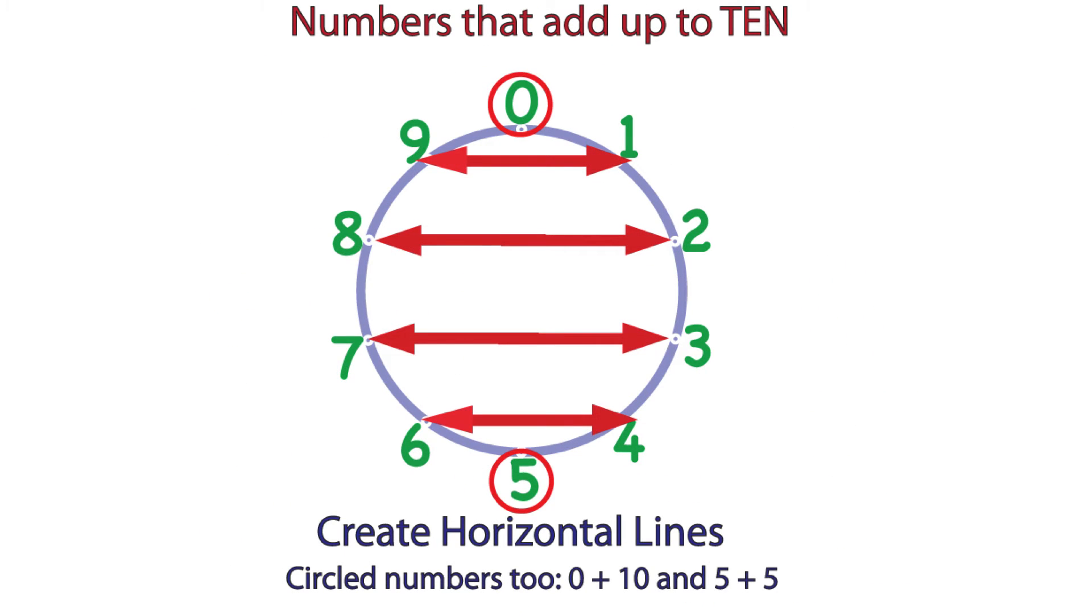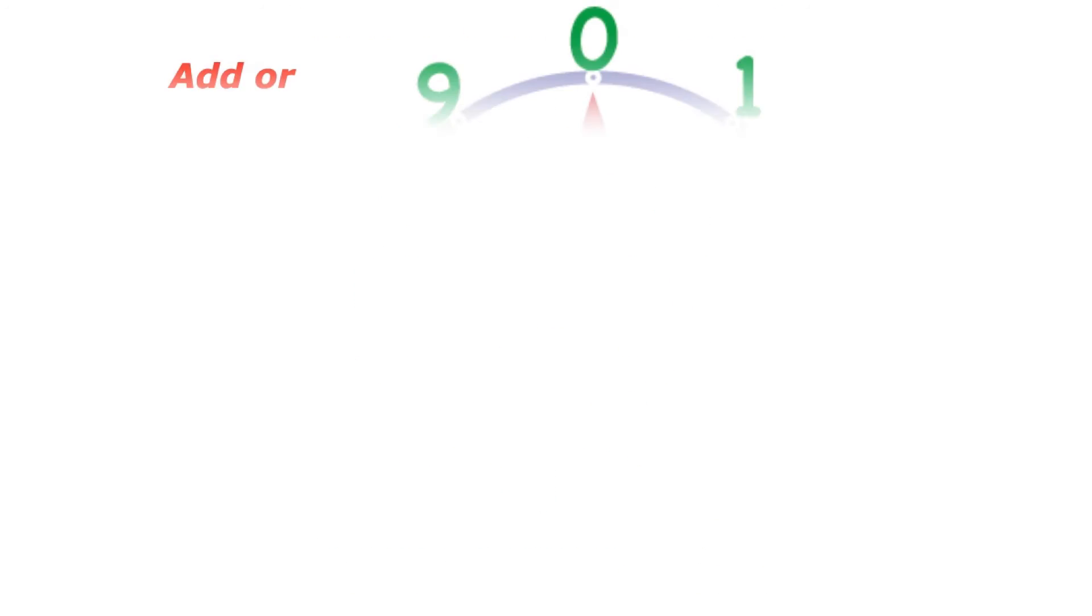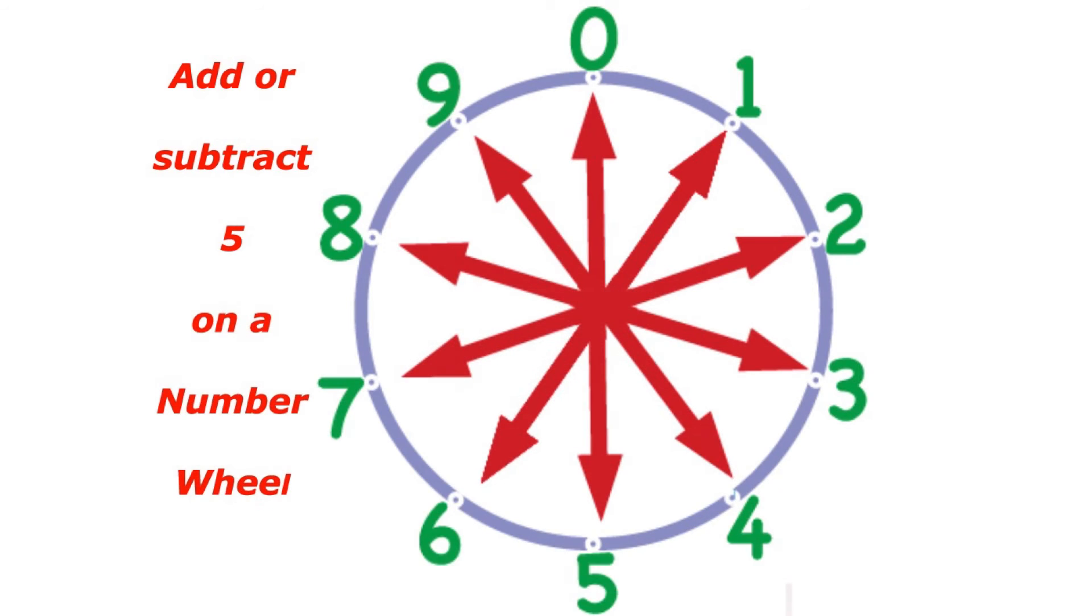Fifth, the important numbers that add up to 10 are horizontal and include 5 and 5 and 0 and 10, and they're easy to see. And adding and subtracting fives can be a key for addition and a lot of fun.